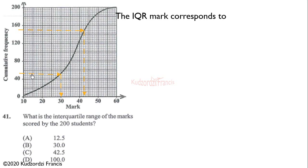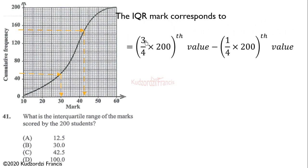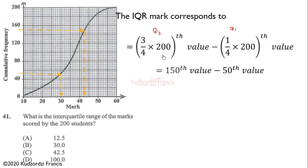The third quartile Q3 is found at three-fourths of the total frequency, which is 200. The first quartile Q1 is found at one-fourth of the total frequency. The difference between Q3 and Q1 gives us the interquartile range.